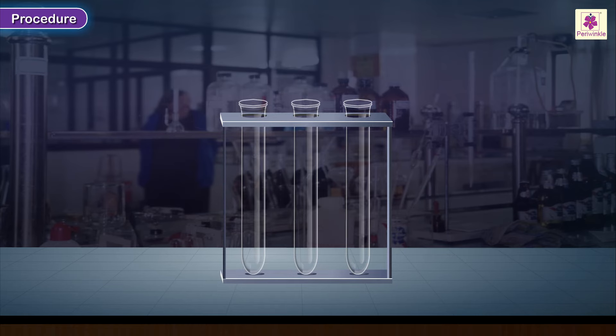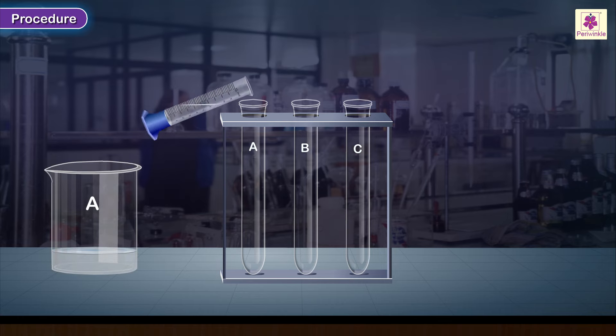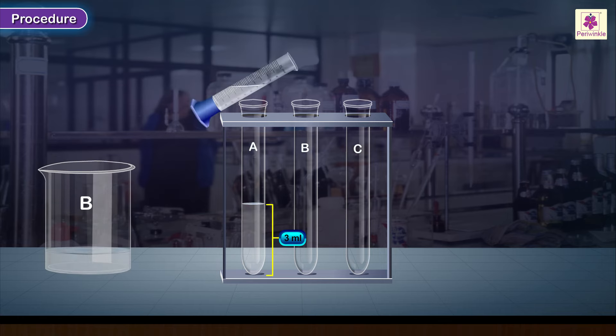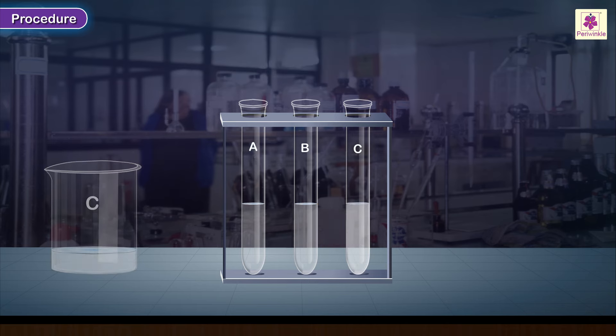Place 3 test tubes in a test tube stand and label them as A, B and C. Add 3 ml of the solution from each beaker to the respective test tubes.